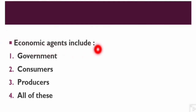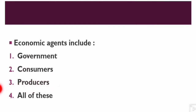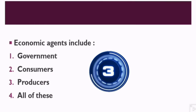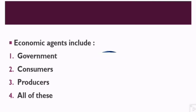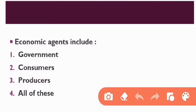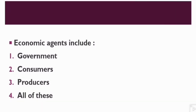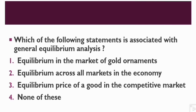Question number 4: Economic agents include — Option 1: Government, Option 2: Consumers, Option 3: Producers, Option 4: All of These. The right answer is option number 4. Economic agents include Government, Consumers, and Producers — all of these are Economic Agents.